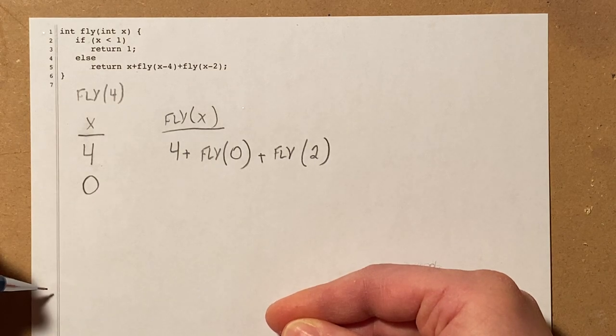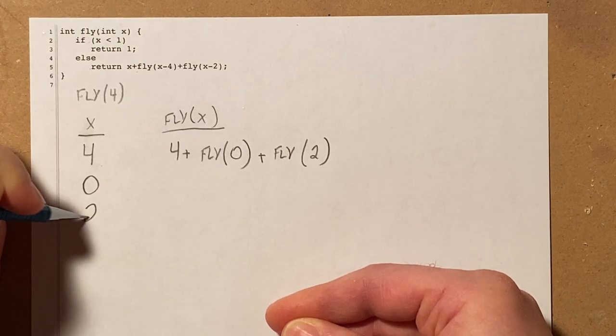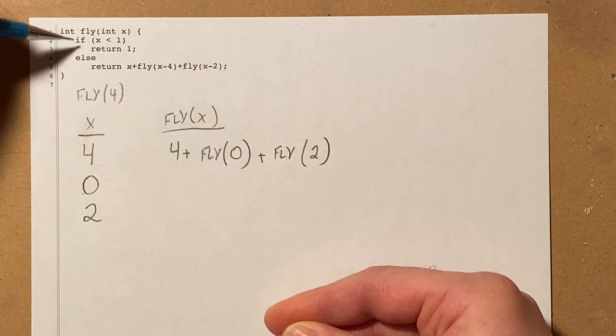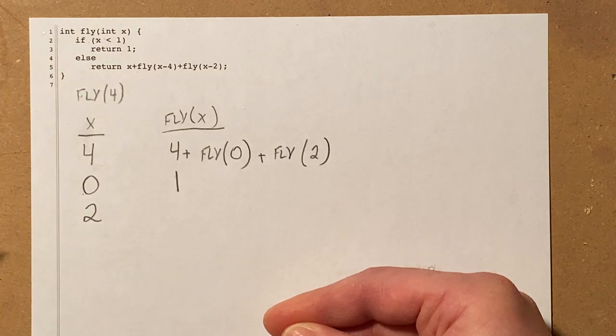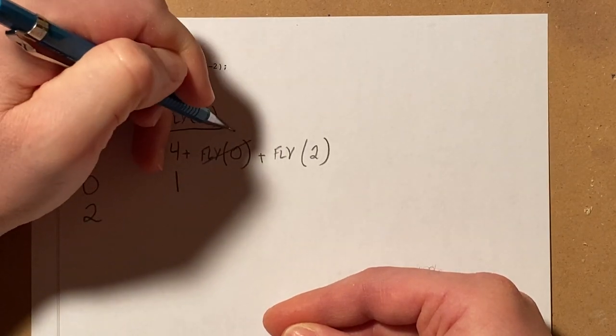When x is 0, if 0 is less than 1, that's true. It's going to return 1. And so I can replace this with a 1.